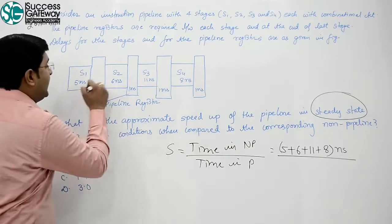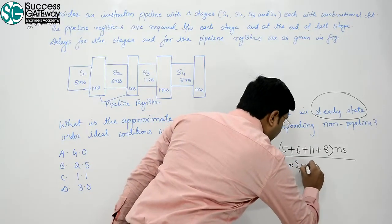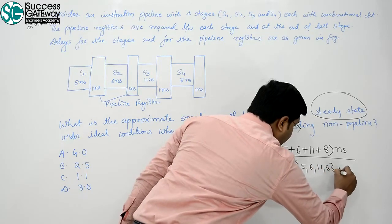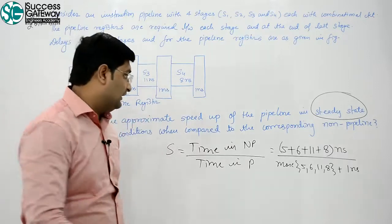And what is the time in pipeline system? In pipeline, max of 5, 6, 11, 8 plus 1 nanosecond is your overhead.